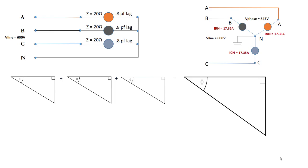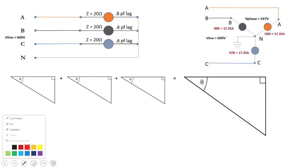In this example we have a Y-connected load and it's a balanced load, because it has the same impedance of 20 ohms in each phase, and a 0.8 power factor in each phase. The V-phase would be 347 volts.